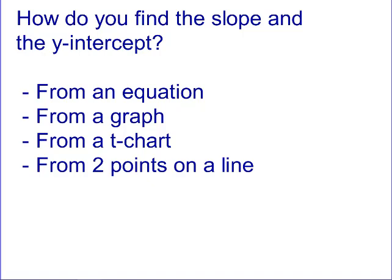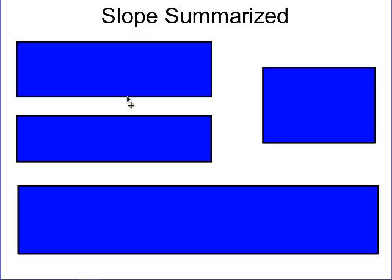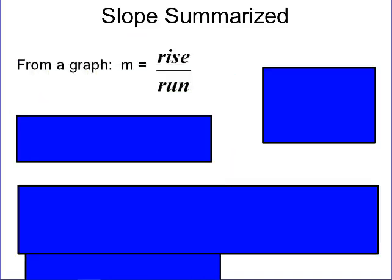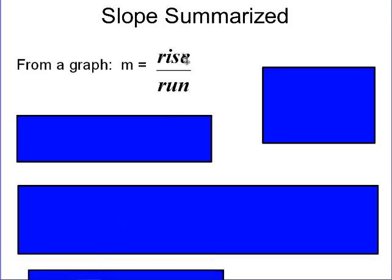Let's review how we do each of those. First, from a graph, we do rise over run — we look at the points that are given and do rise over run. Sometimes this rise could be a fall, because as you read a graph from left to right, if it's going uphill then it's a rise and the slope is positive. If it's going downhill, then it's a fall and the slope is negative.